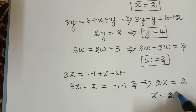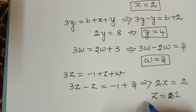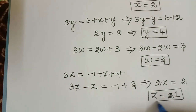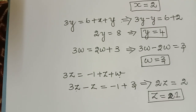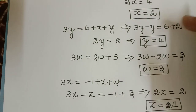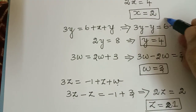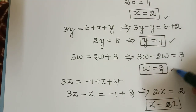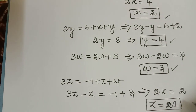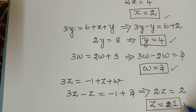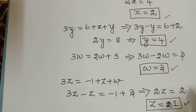So therefore the value of x is 2, y is 4, w is 3, and the value of z is equal to 1. And hence we have solved for x, y, z, and w. Thank you.